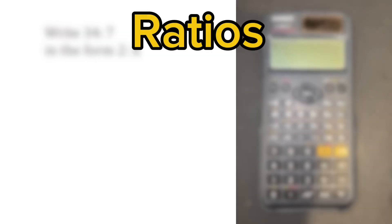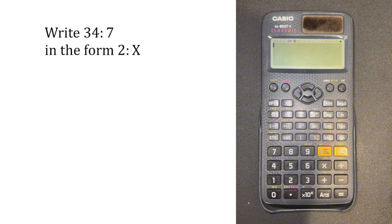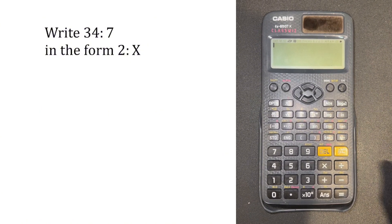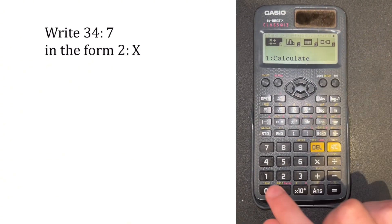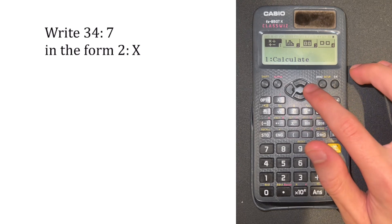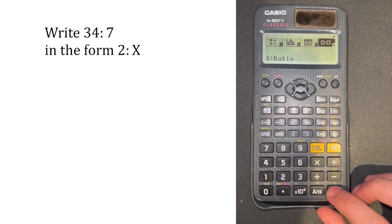This next trick is involving the topic of ratios, which is something I personally struggled with. So let's say you want to write the ratio 34 to 7 in the form 2 to X. Well, to do this with your calculator, you first press the menu button, then look at the number 4. Either you can press it or scroll to the fourth menu, which says ratio.